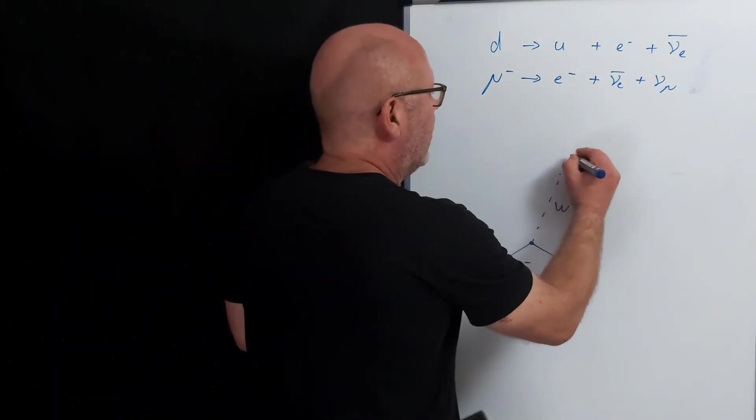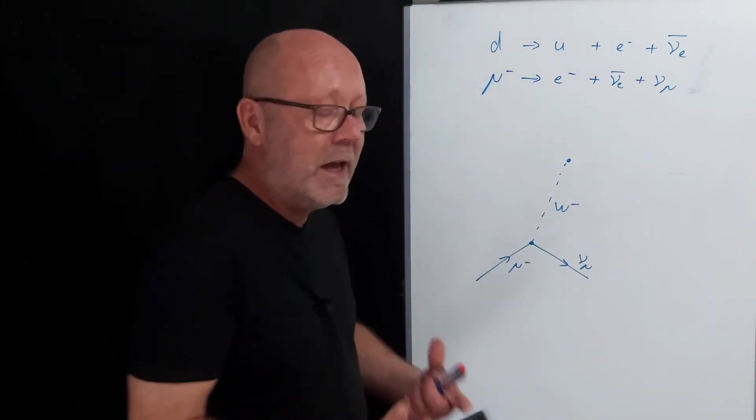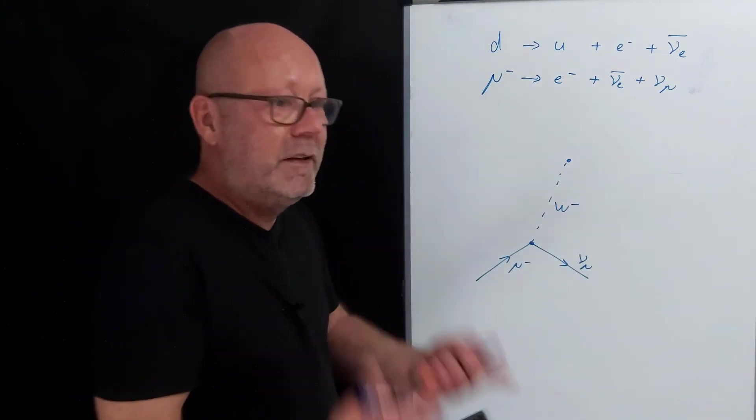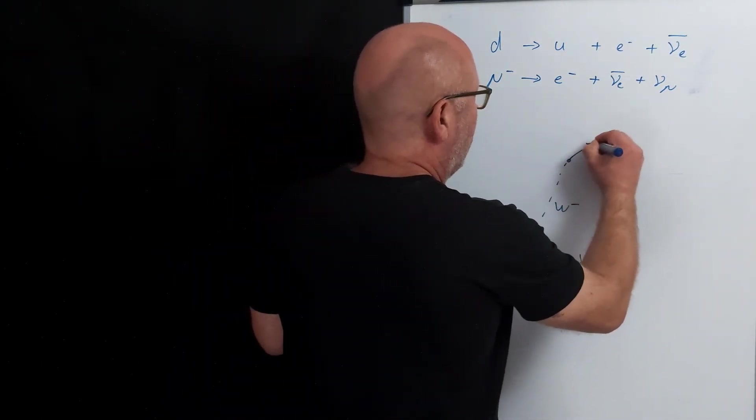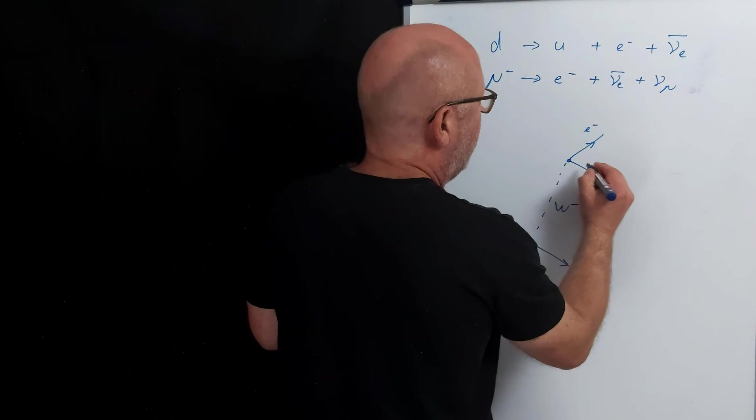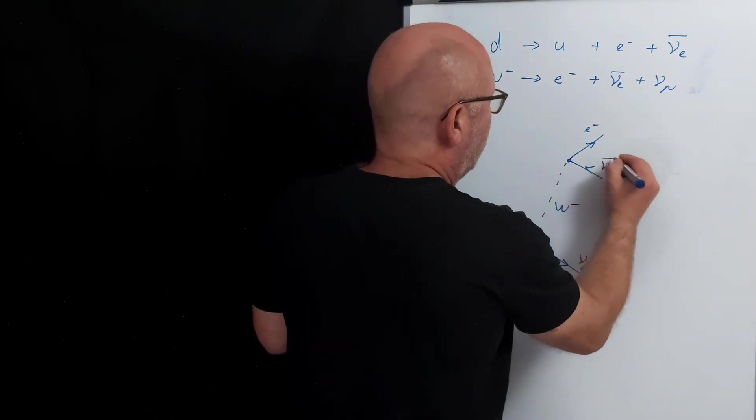Then, it's easy. The W- is actually very heavy, very unstable. It will therefore decay quickly into the electron and the anti-neutrino of the electron.